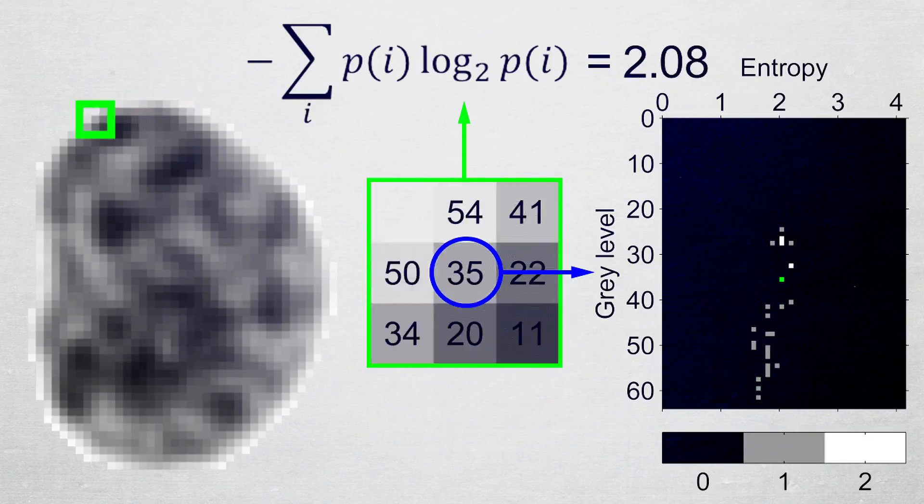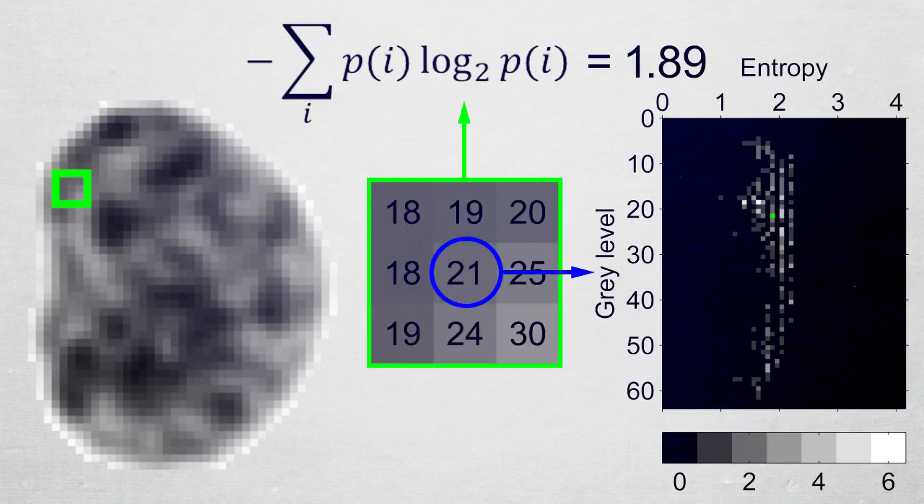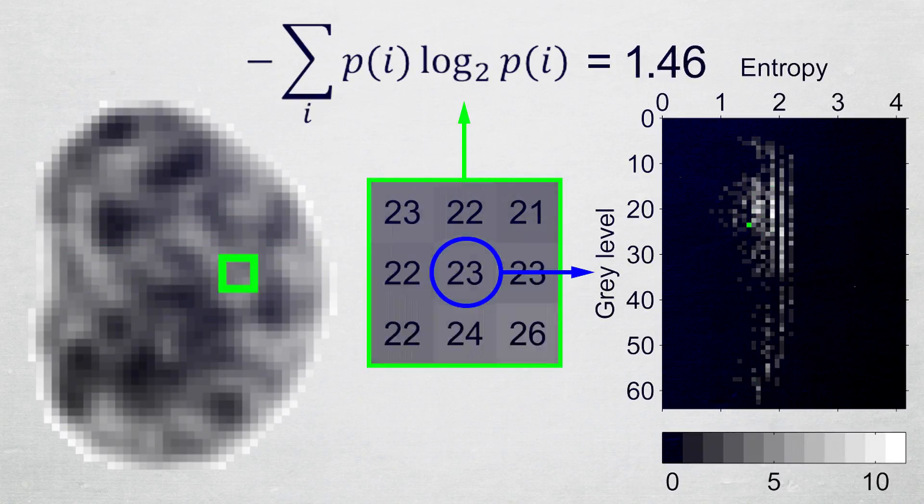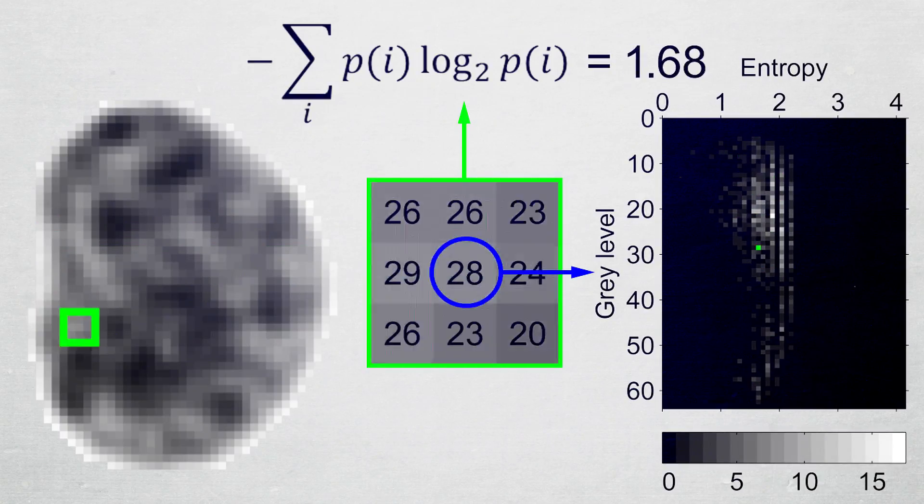When each pixel has been processed, the matrix provides information about how frequently each pair of entropy and center gray level occurs in the given nuclear image.